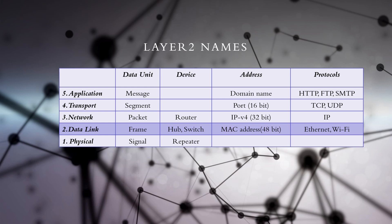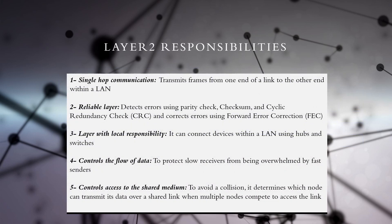MAC addresses are assigned by device manufacturers and are also referred to as hardware addresses. The most popular protocols that act in Layer 2 are Ethernet, which is used in wired LANs, and Wi-Fi, which is the protocol of wireless LANs. Layer 2 is responsible for single-link communications within a network segment such as a local area network.